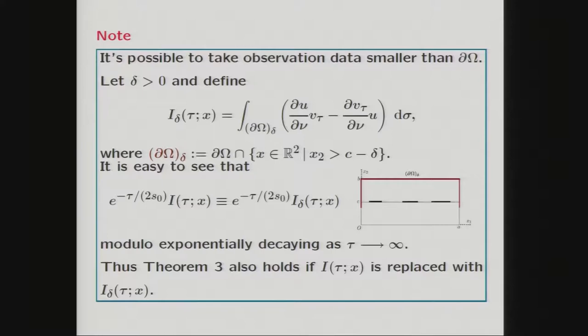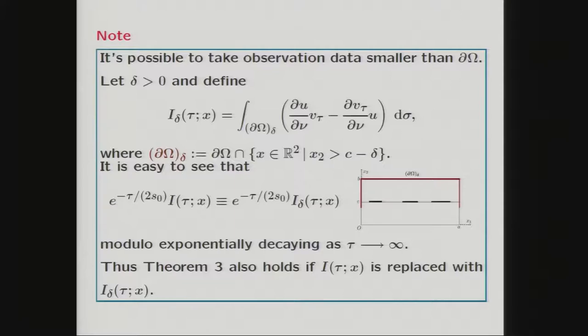One important remark: it is possible to use observation data on a smaller portion than the full boundary of Ω. Precisely, for positive δ, we define a new indicator function I_{δ₀,τ}(x) integrated over ∂Ω_δ — indicated by the brown line in the figure. These two indicator functions are equivalent modulo exponentially decaying terms as τ → ∞. Therefore, Theorem 3 also holds if I is replaced by I_{δ}. This means that the boundary data on the lower side of the boundary is unnecessary in this case.